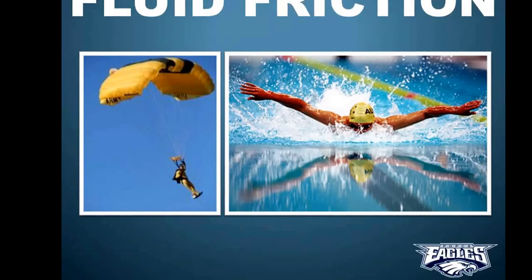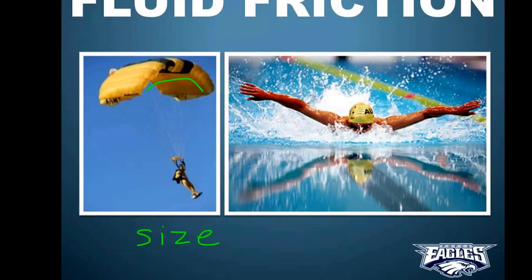There are three factors you can change to manipulate the amount of fluid friction you get. One is size. Imagine this parachute — if it was bigger, would it make the skydiver go slower? Obviously it would. The bigger the parachute, the more air you're going to catch on the way down and the more friction there's going to be to slow you down. Same thing in the water: if you're a bigger person, you're going to catch more water, more water is going to run into you, and it's going to oppose your motion more.